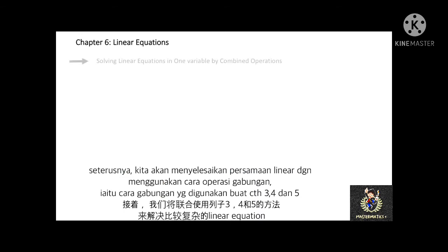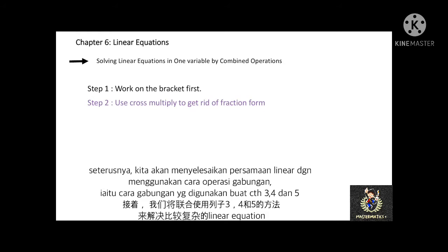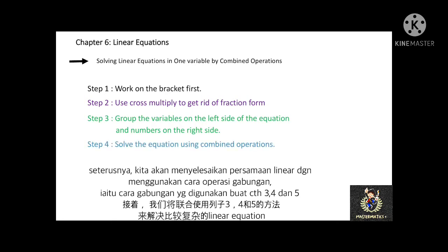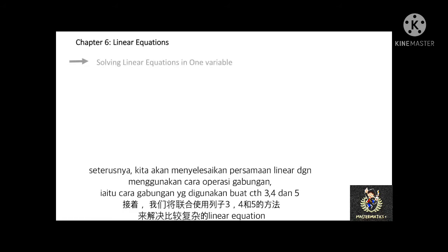Next, let's move to solving linear equations in one variable using combined operations. As the name suggests, combined operations involve more working steps on the equation. First, work on the bracket first. Second, if a fraction form exists, use cross multiplication to get rid of the fraction. Step 3: group the variables on the left-hand side and numbers on the right-hand side. Step 4: solve the equation using combined operations. And last, check your solution.